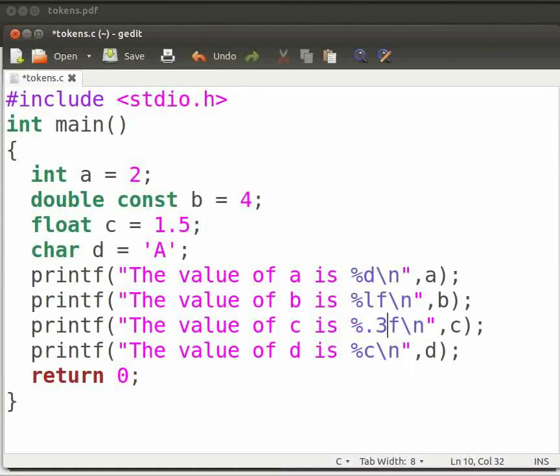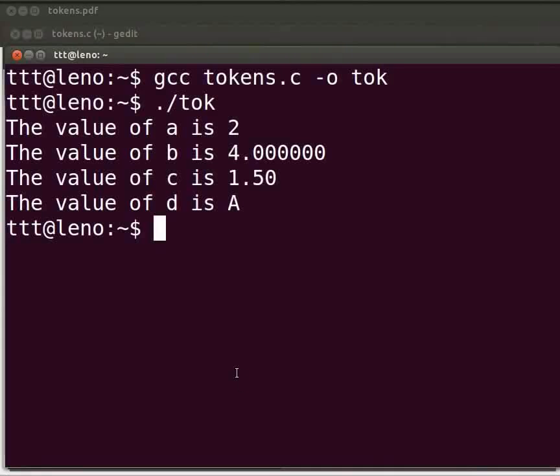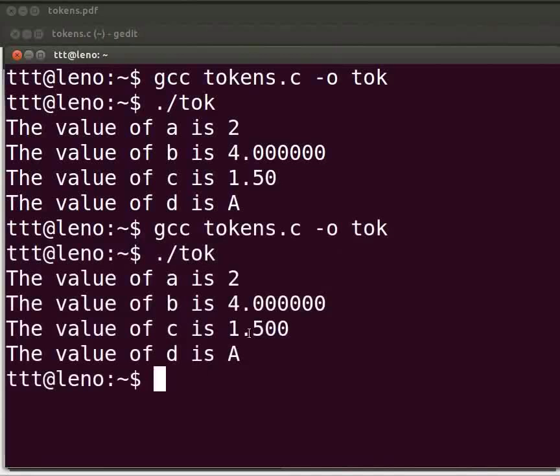Let us replace %.2f with %.3f. Now click on save. Come back to our terminal. Compile as before. Execute as before. We see here three values after the decimal point.